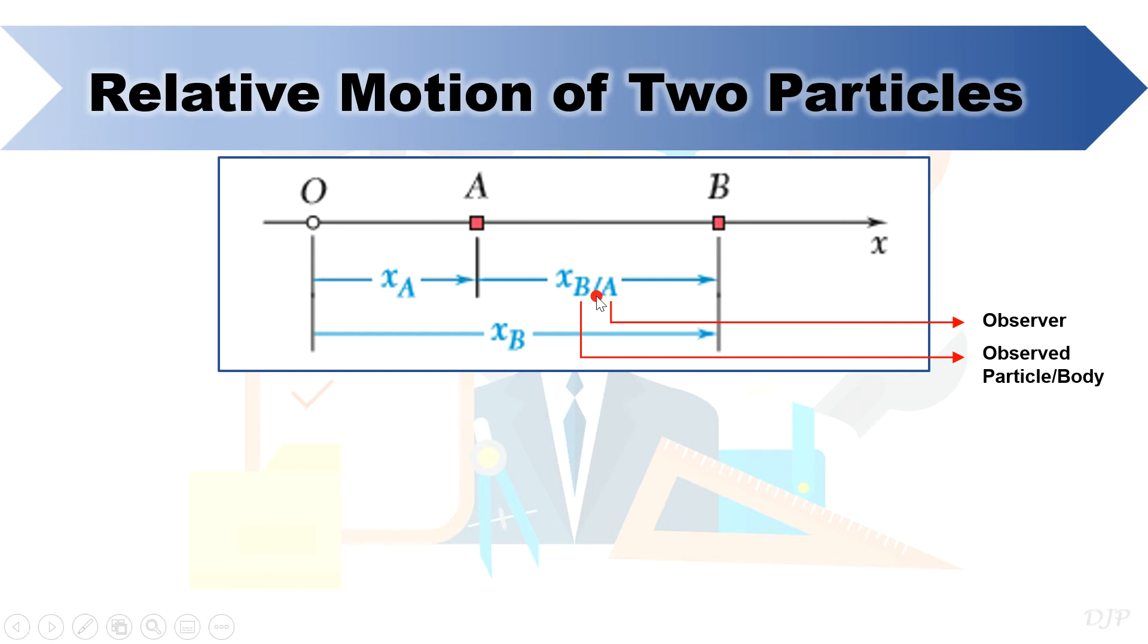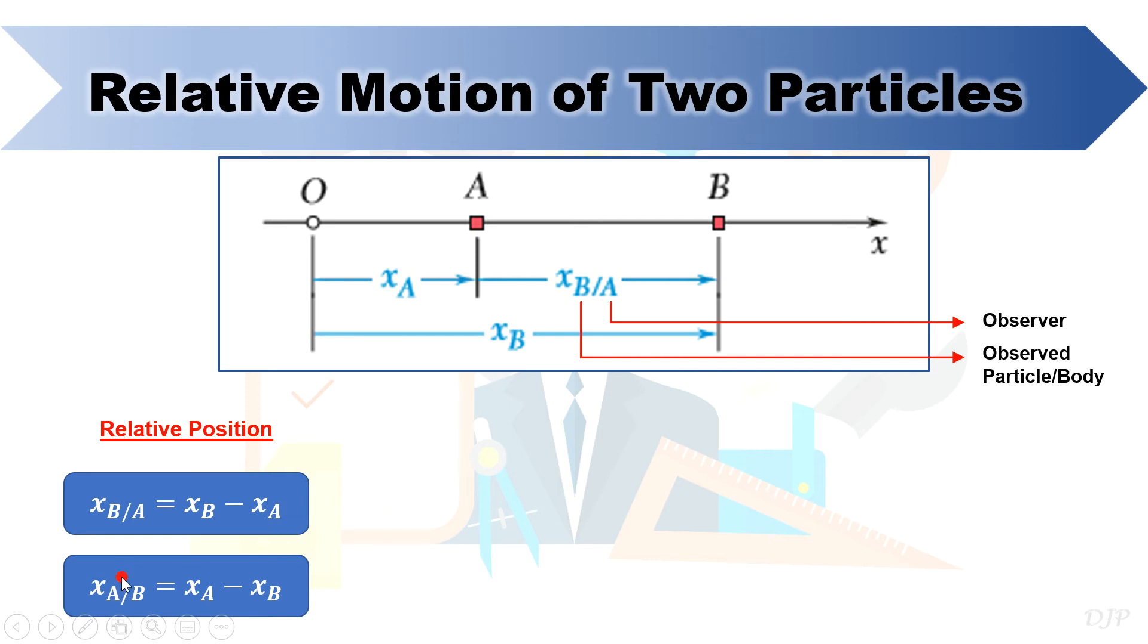Based on this diagram, we now have the equation for relative position. One way to easily remember this equation is to express the relative position equal to the position of the particle indicated as numerator in its subscript minus the position of the particle indicated as denominator in its subscript. Thus, relative position of particle A with respect to B can be also expressed as follows.